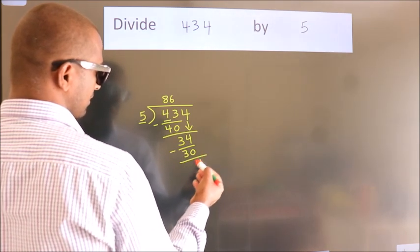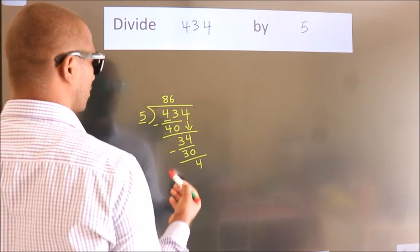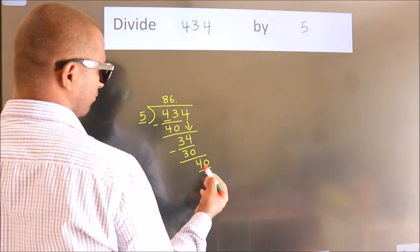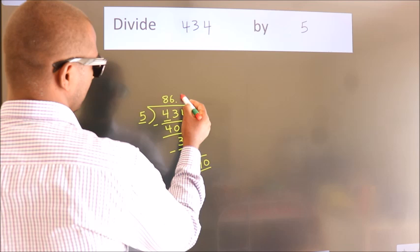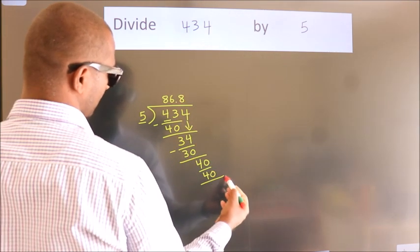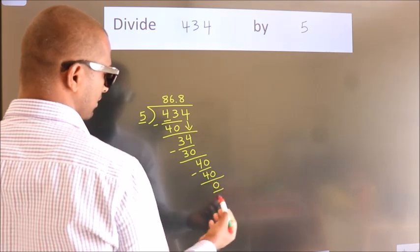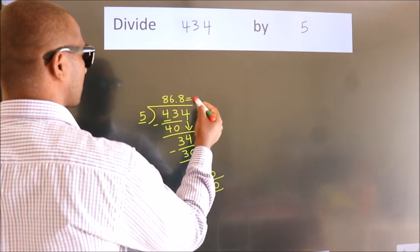After this, no more numbers to bring down. So what we do is put a dot and take 0, making 40. When do we get 40 in the 5 table? 5 times 8 equals 40. Now we subtract. We get 0. We got remainder 0, so this is our quotient.